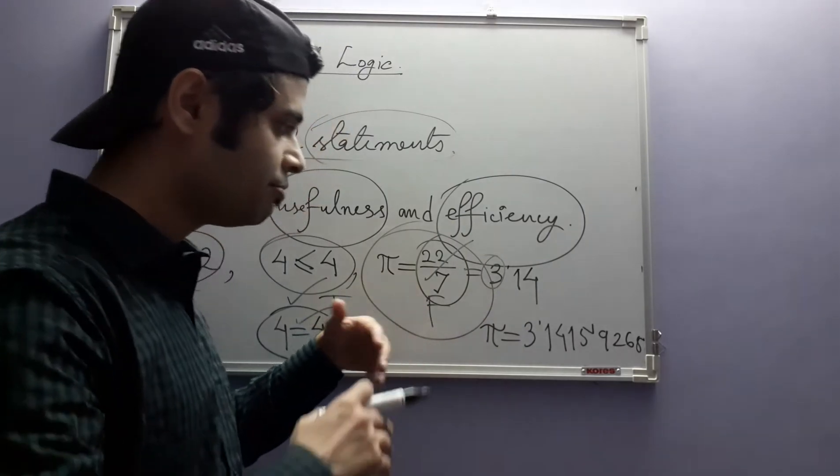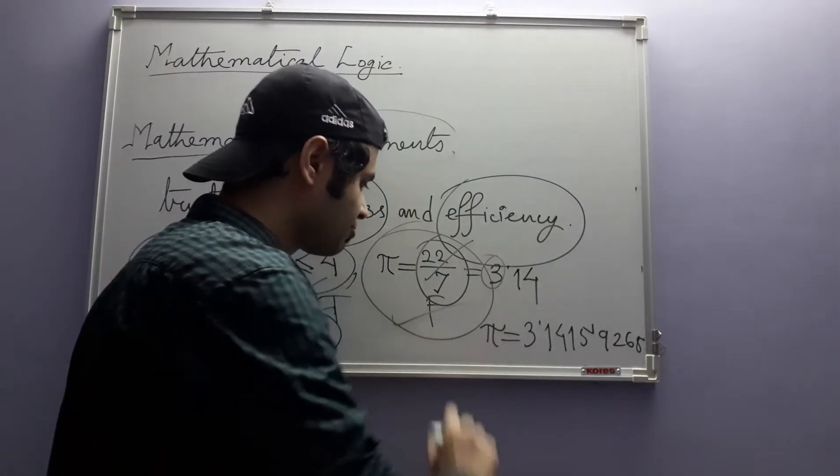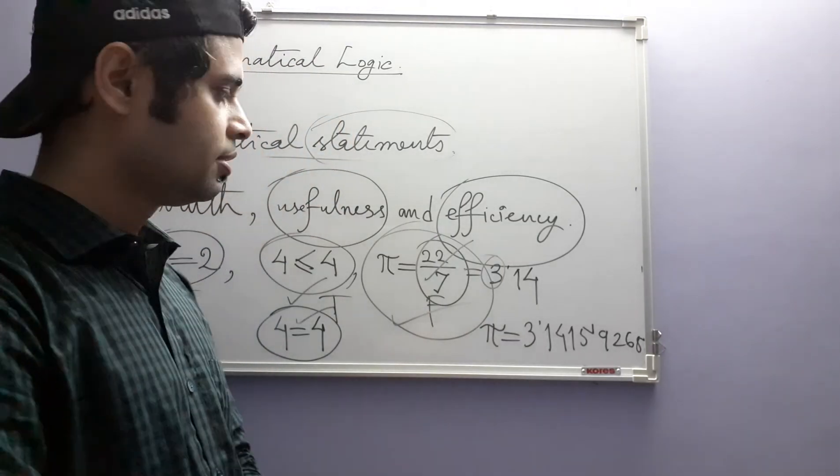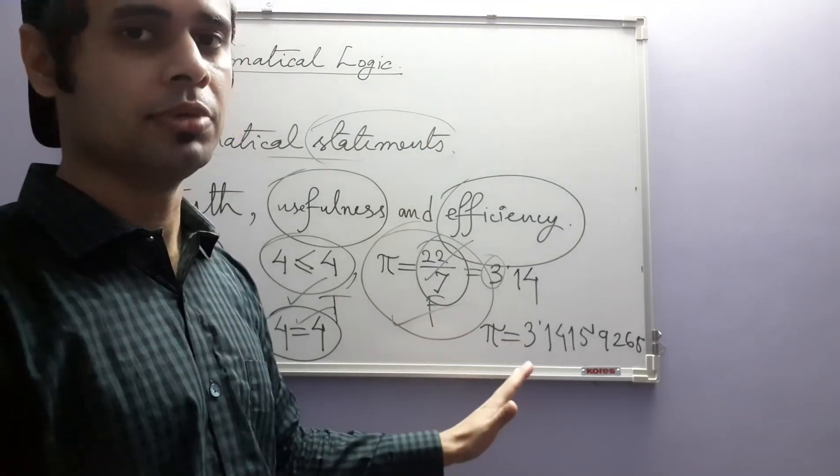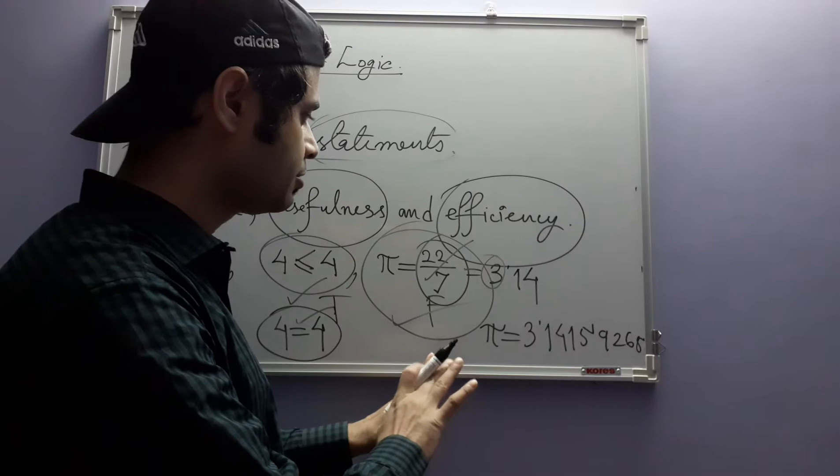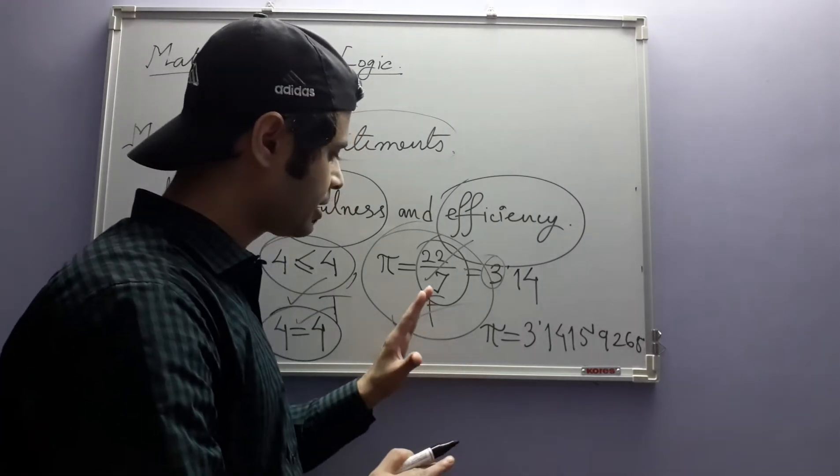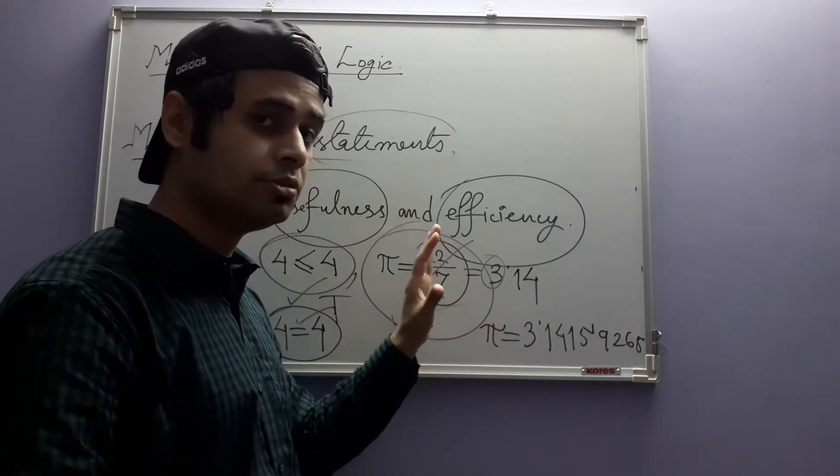And when we apply mathematics in science, this is most often the case, surprisingly. In science, most of the things are approximations. They are not absolutely perfectly true things, but they are approximations. Approximations, nonetheless, they are useful.